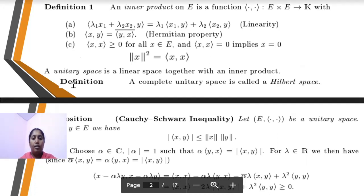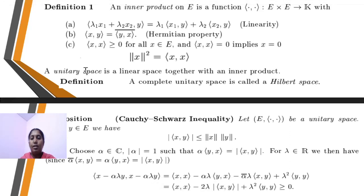Next definition: Unitary space. A unitary space is a linear space together with an inner product. Next definition: Hilbert space. A complete unitary space is called a Hilbert space.